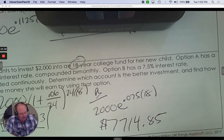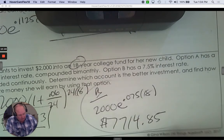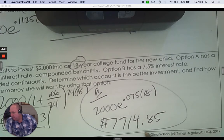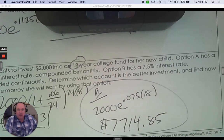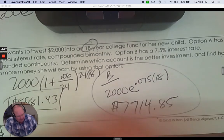Then the question is, how much more money will she earn by using that option? So this is the better option. And then how much better is option B? Then you take the two money and we subtract them.